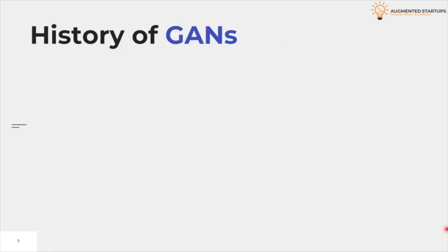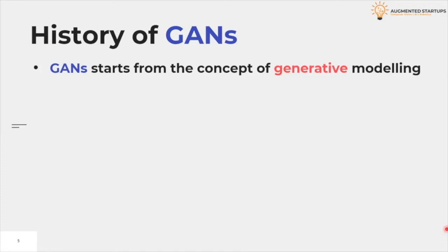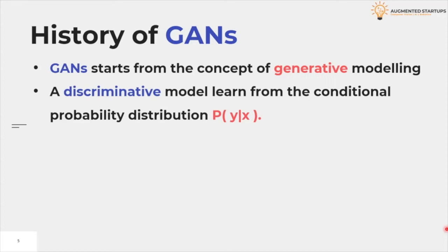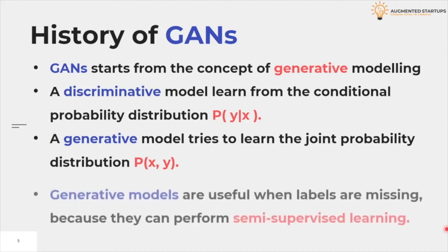Let us first take a look at what generative models are and how they differ from discriminative models. Say you have input data x and corresponding output labels y. A discriminative model tries to directly learn the conditional probability distribution p(y|x). On the other hand, a generative model tries to learn the joint probability distribution p(x, y), which can be transformed into p(y|x) using Bayes' rule. Additionally, generative models can use the joint distribution p(x, y) to generate likely (x, y) samples.